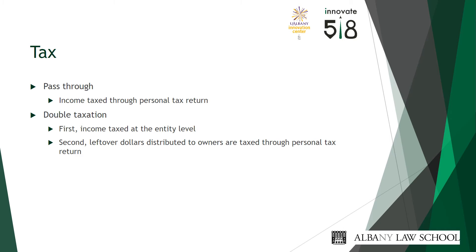There are two categories of taxation in this area: pass-through taxation and double taxation. If the business is a pass-through entity, the profits are passed through to the owners and those monies are reported on the owner's personal tax return. Entities subject to double taxation are taxed first on company profits, and any monies left over and distributed to the owners are reported as personal income on the individual tax returns.